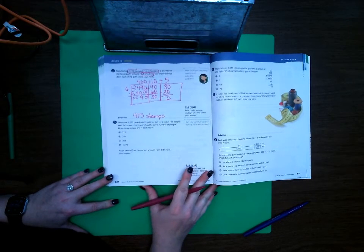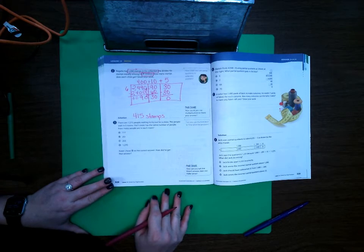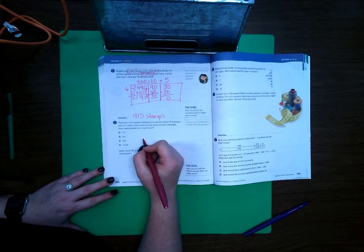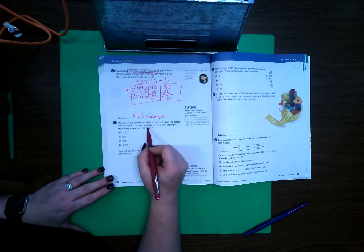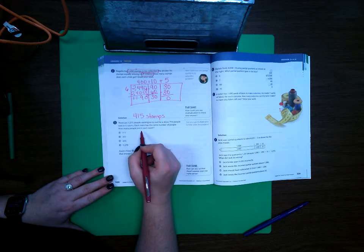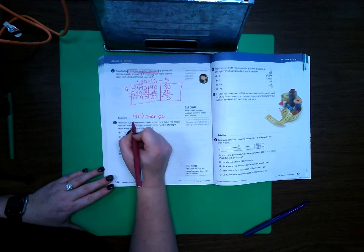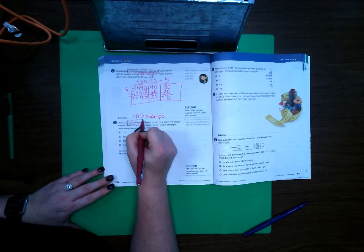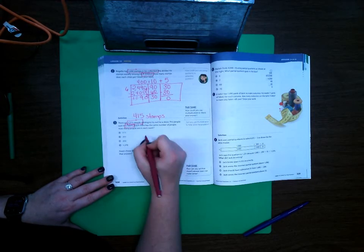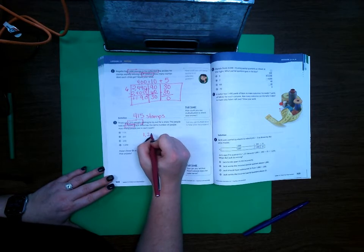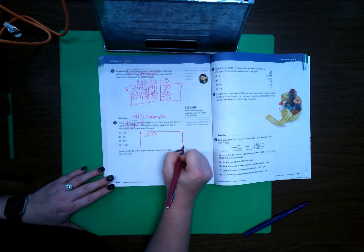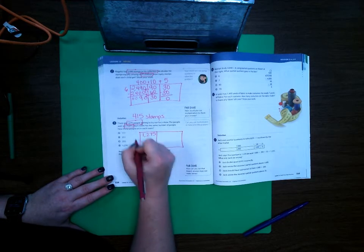Number three: There are 1,275 people waiting to try out for a show. The people wait in five rooms. Each room has the same number of people. How many people are in each room? So we know that we have 1,275 people total and that they're divided between five rooms. Let's go ahead and write that number down and get my area model by five rooms.